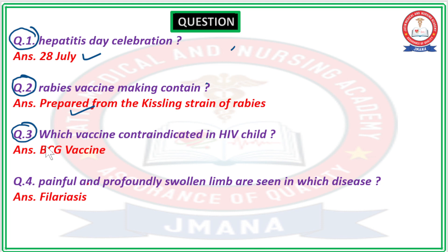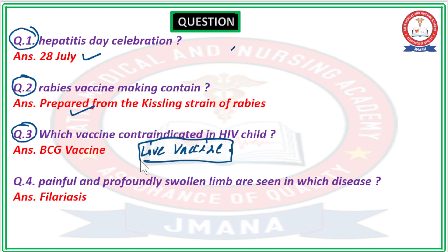The exact option is not known, but the question asked about contraindicated vaccines in an HIV child. No live vaccine of any kind is given to such a child, because an HIV-infected child is immunocompromised. In that condition, live vaccines are not administered. The first vaccine — BCG — is a type of live vaccine, and is therefore contraindicated in HIV-infected children.